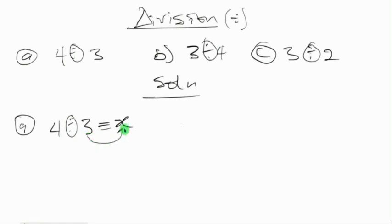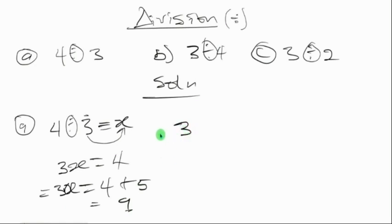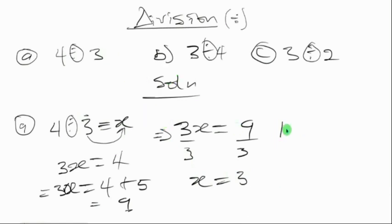We multiply both sides by three, so 3x equals four. Since four is a residue in mod five, we add five to make it a dividend: 3x equals four plus five, which equals nine. Dividing both sides by three gives x equals three. So four divided by three equals three in mod five.